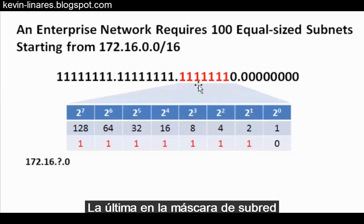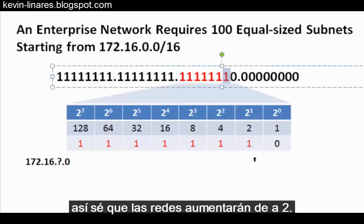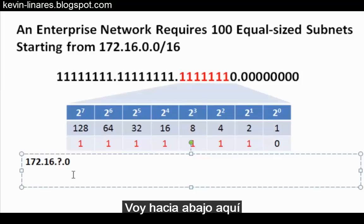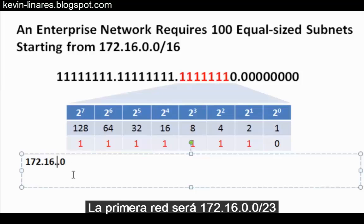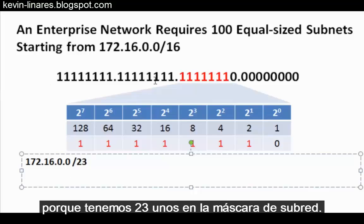The last one in the subnet mask is in the twos place, so I know that the networks will go up by two. I can go down here and fill in the networks. The first network will be 172.16.0.0/23, because we have 23 ones now in the subnet mask.